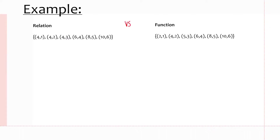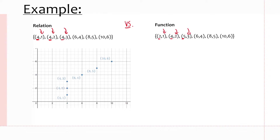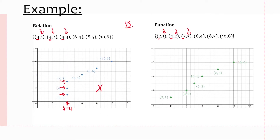To solidify this idea: in a relation, the same x value can produce multiple y values, but in a function, one x value produces only one y value. You can see this in the graph — when x is equal to 4, there are three different y values, so that is not a function. A function shows a unique y value for every x value.